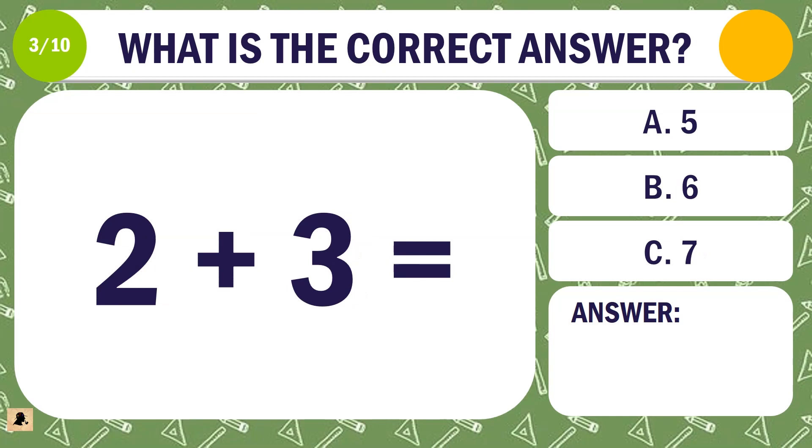Question 3. What is the correct answer for 2 plus 3? A. 5. B. 6. Or C. 7.